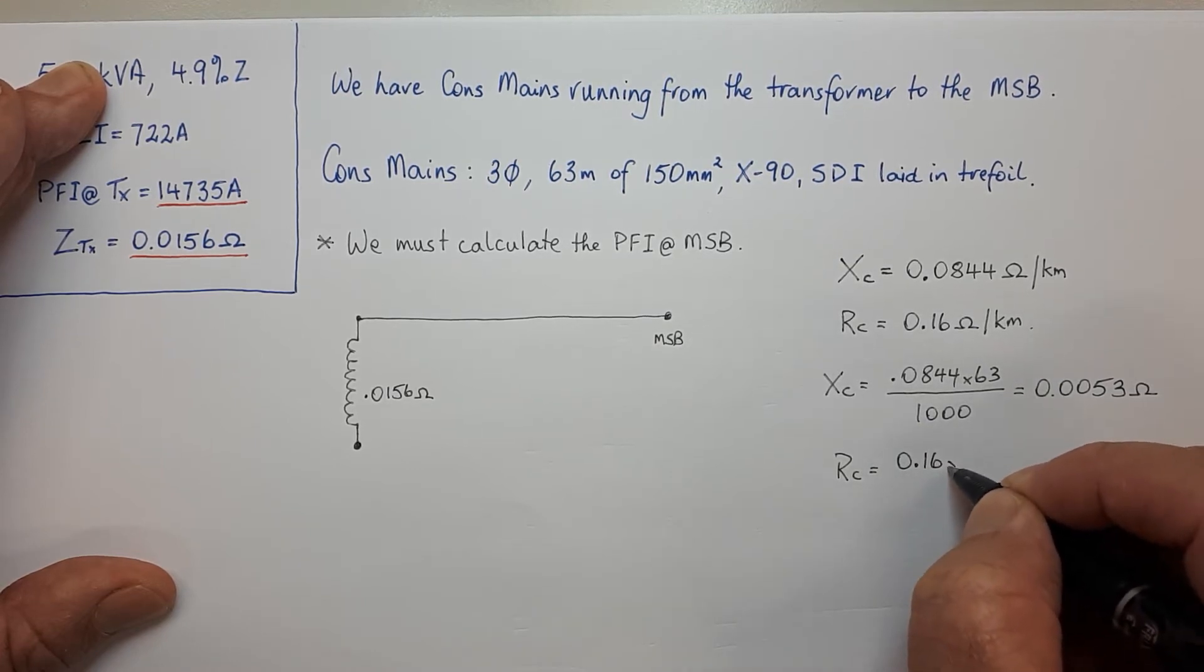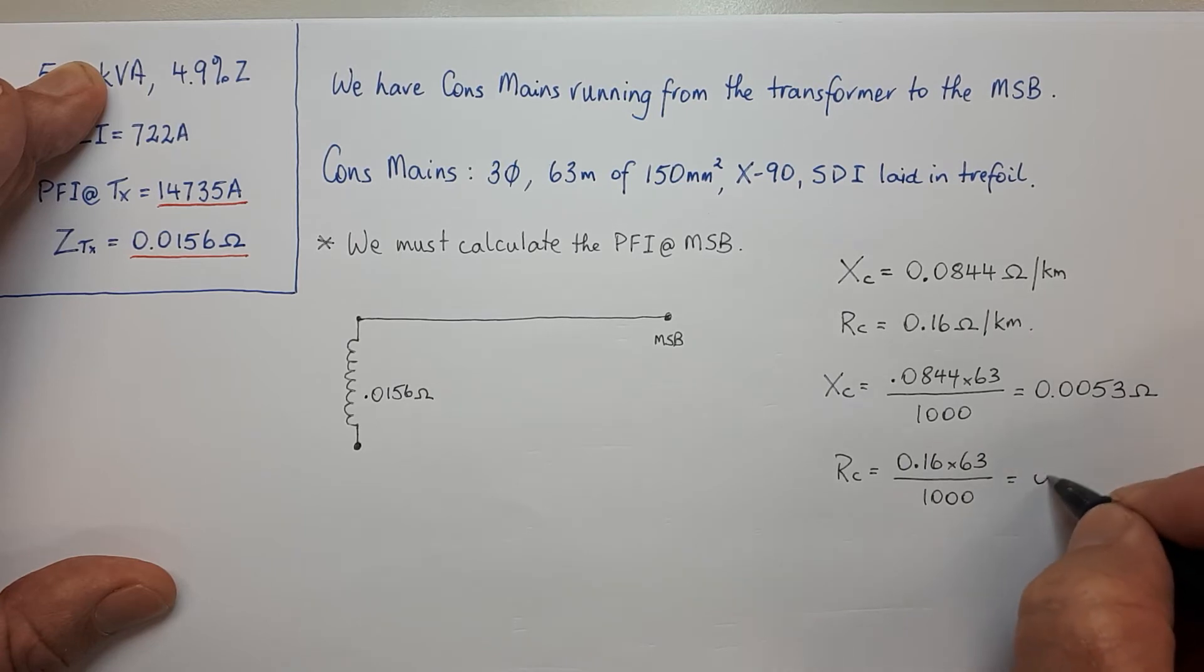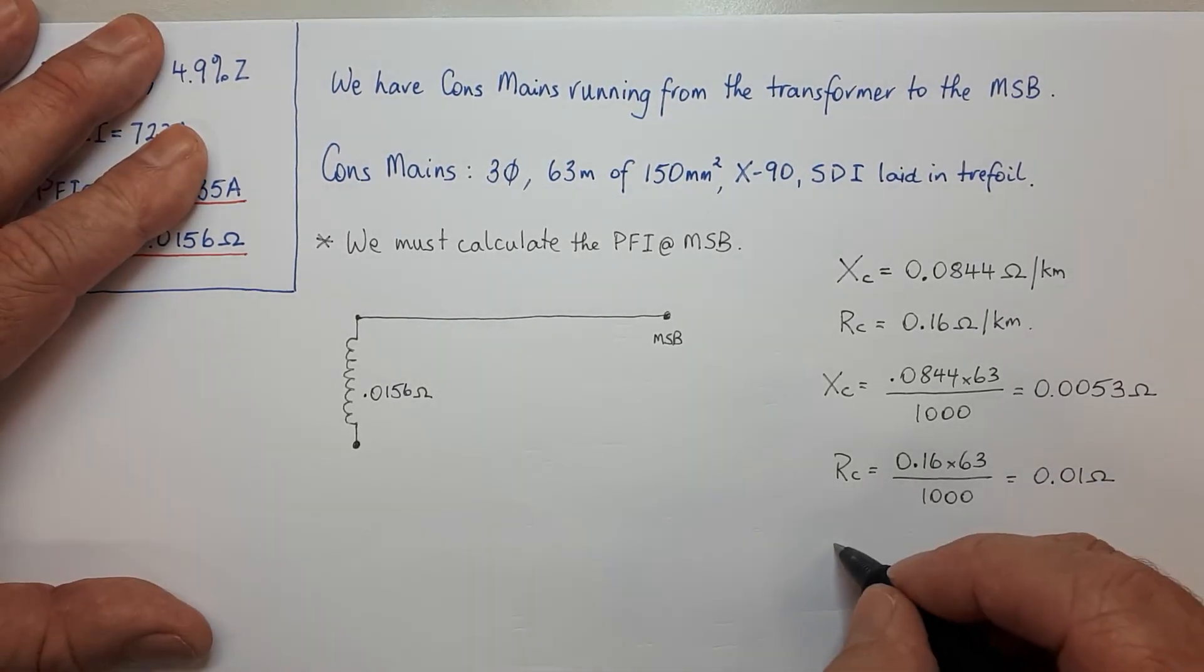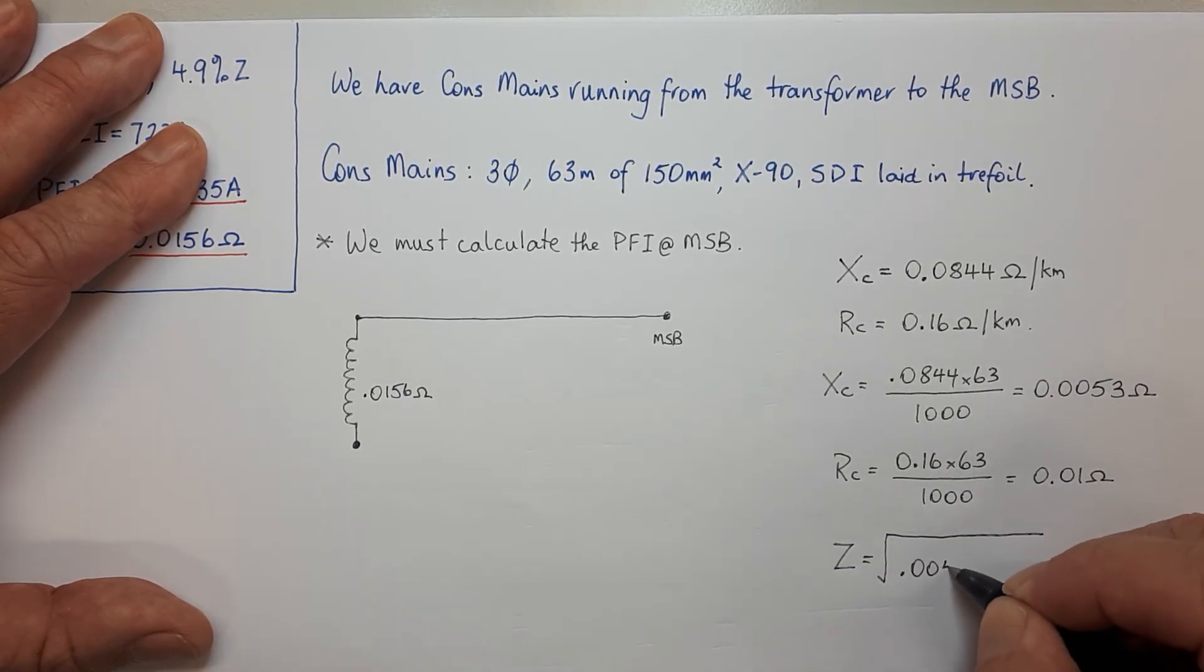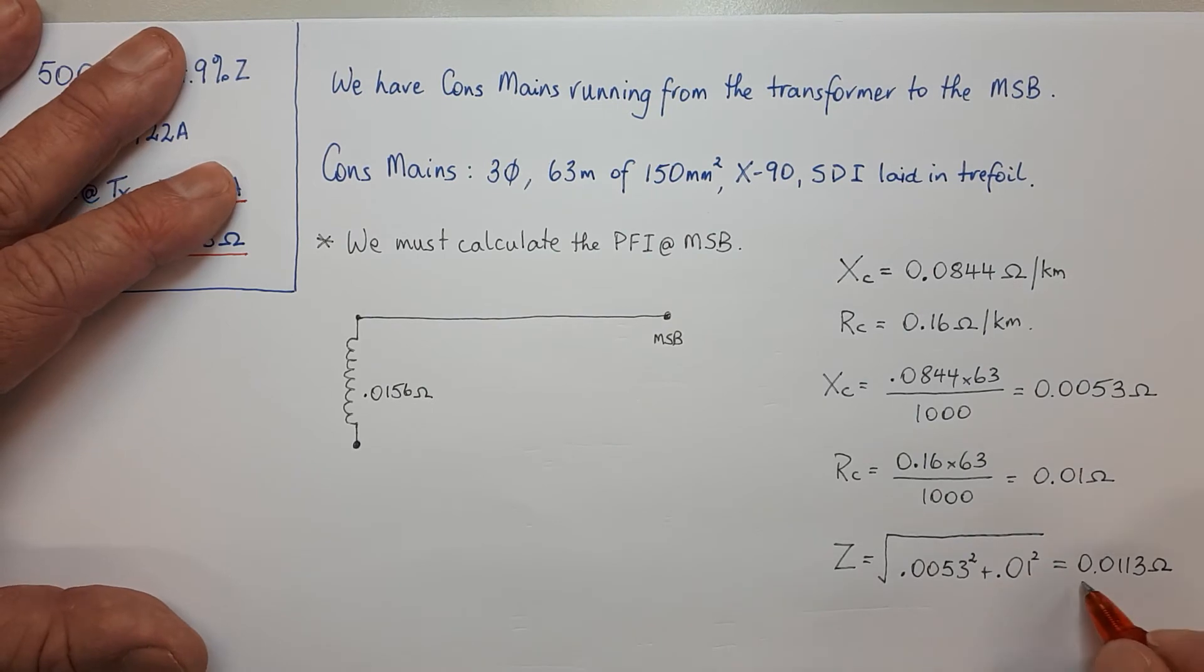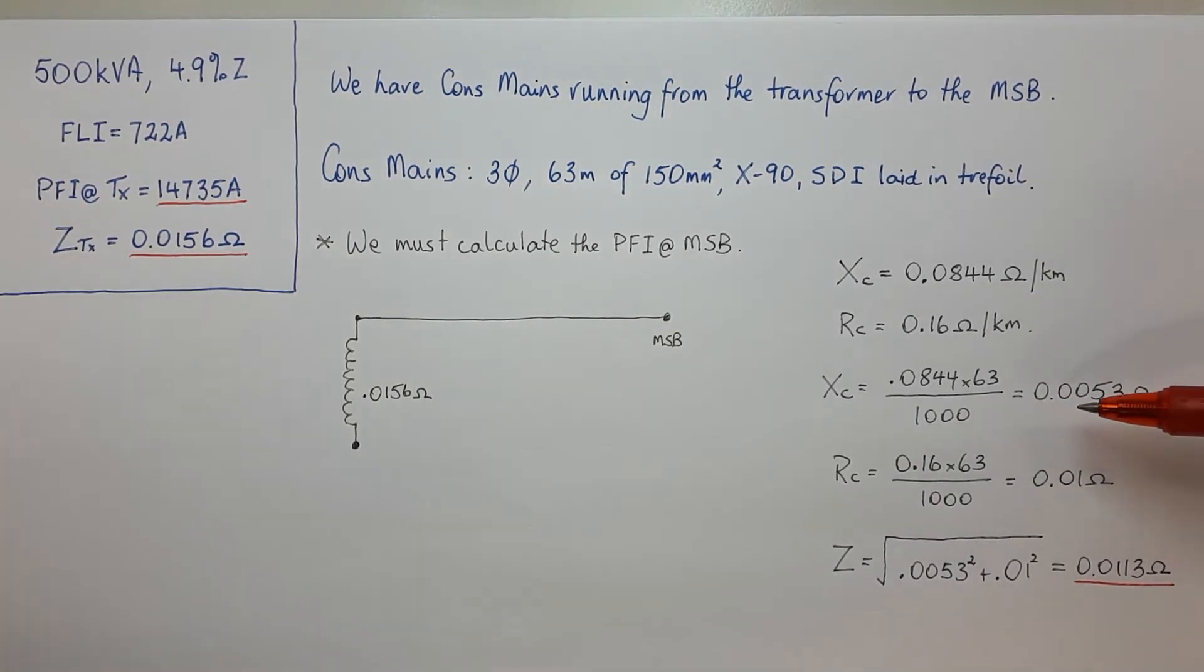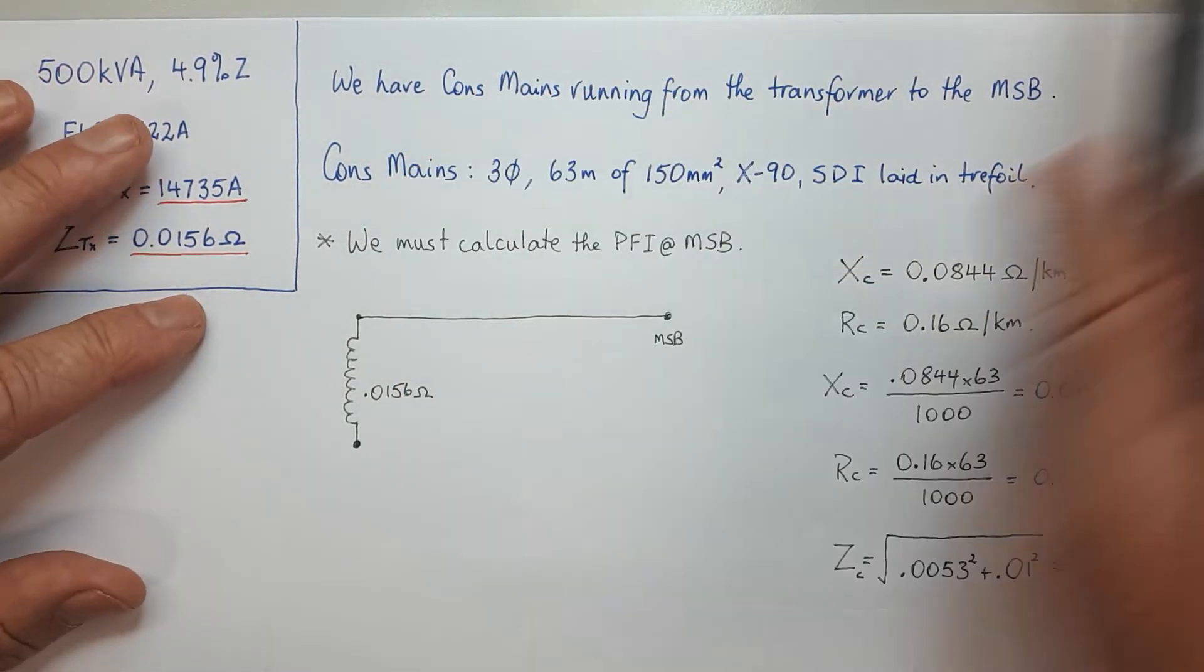The resistance is 0.01 ohms or close enough. Zed is the square root of 0.0053 squared plus 0.01 squared, and that comes to 0.0113. As we always knew would happen, it's the longest side, the biggest value out of X, R, and Zed. So that's Zed C.